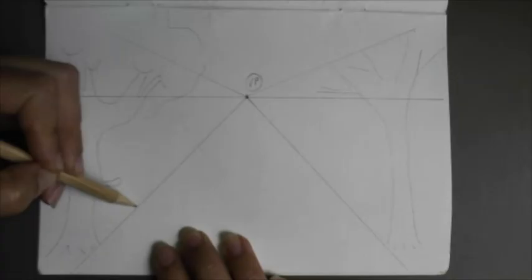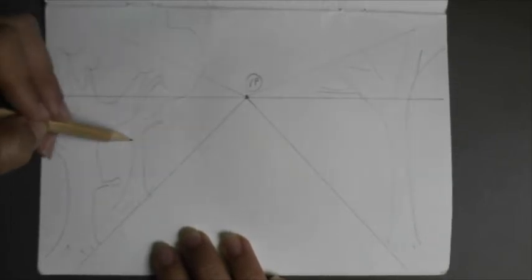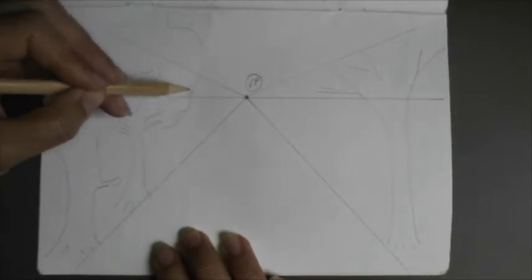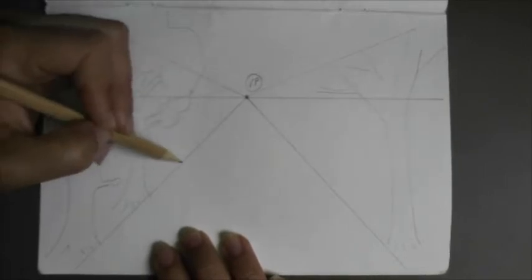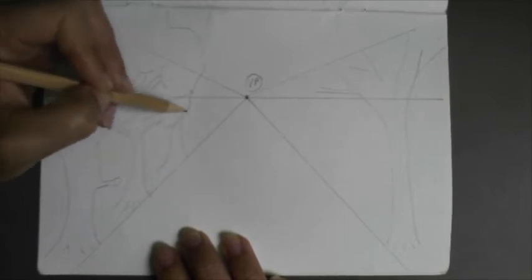And basically, all your trees or anything you draw needs to be within those two lines in that triangle. And it needs to get smaller as it goes further away from you. That's what's going to create the perspective or the illusion of space.